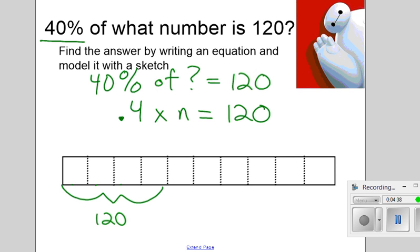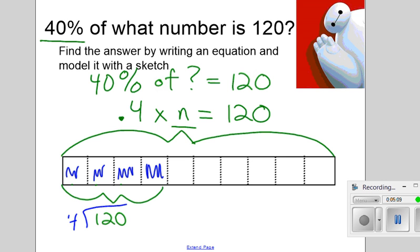That means that we are looking for this total. To solve for n in this case, we could think about this in a couple of different ways. We could look at these four sections that we know and divide 120 by 4 to get what 10% is, and then you could add each of those ten percents together to get a total.